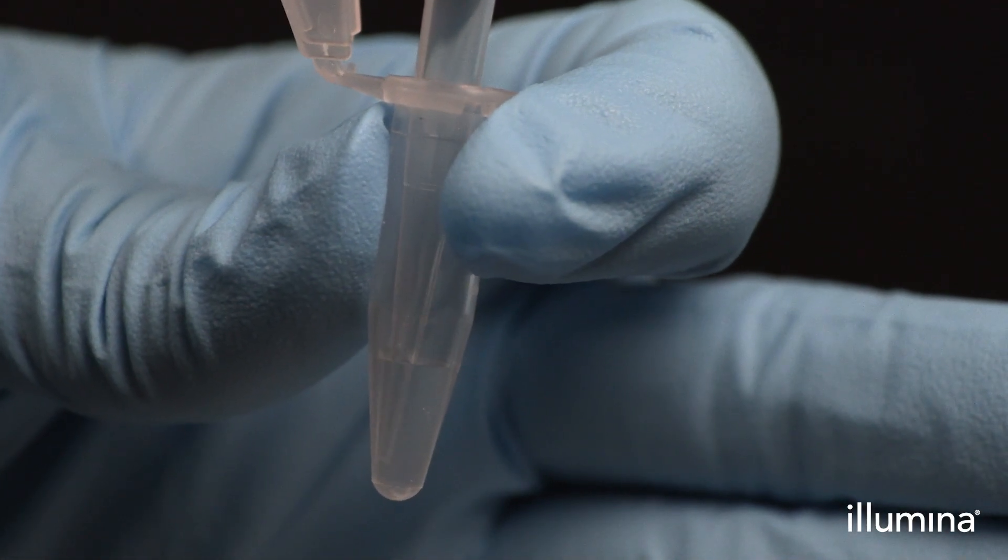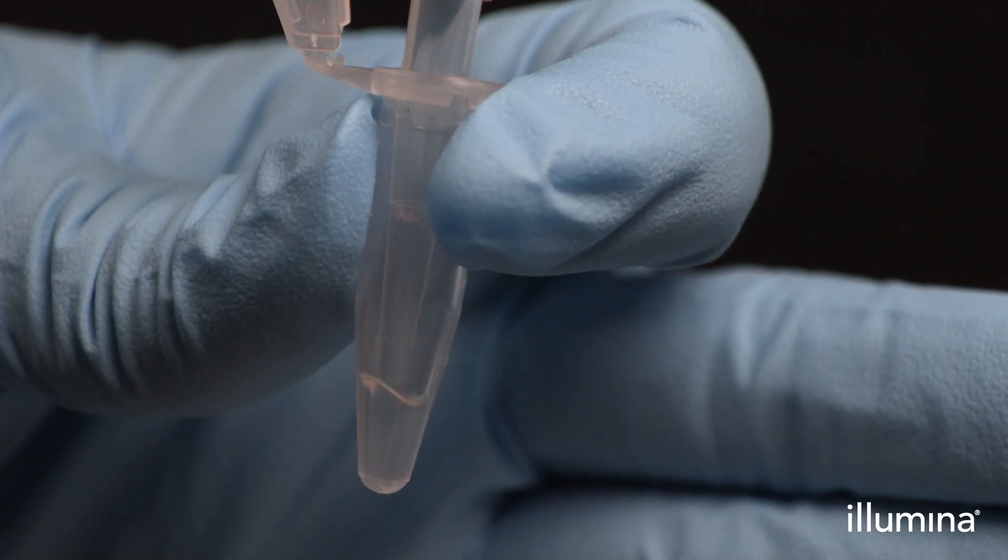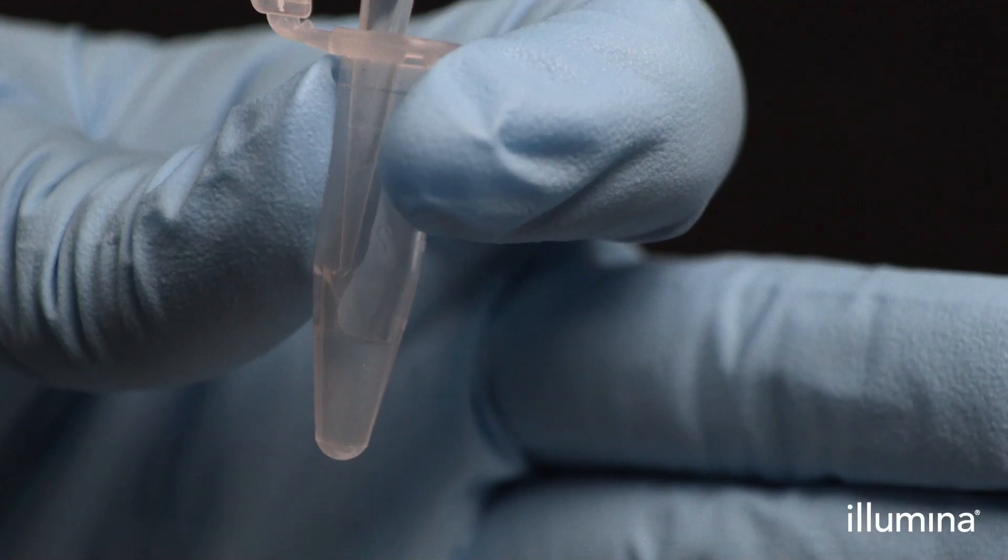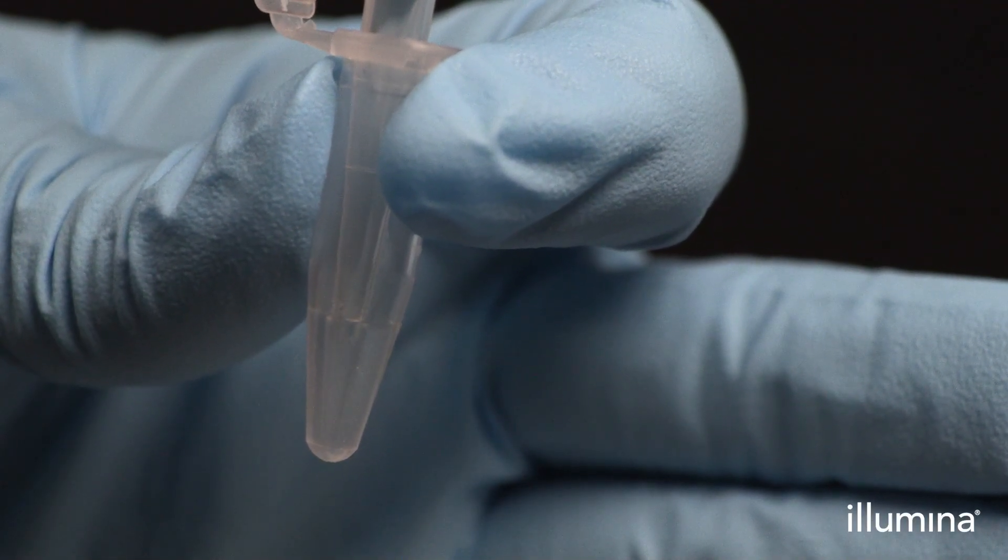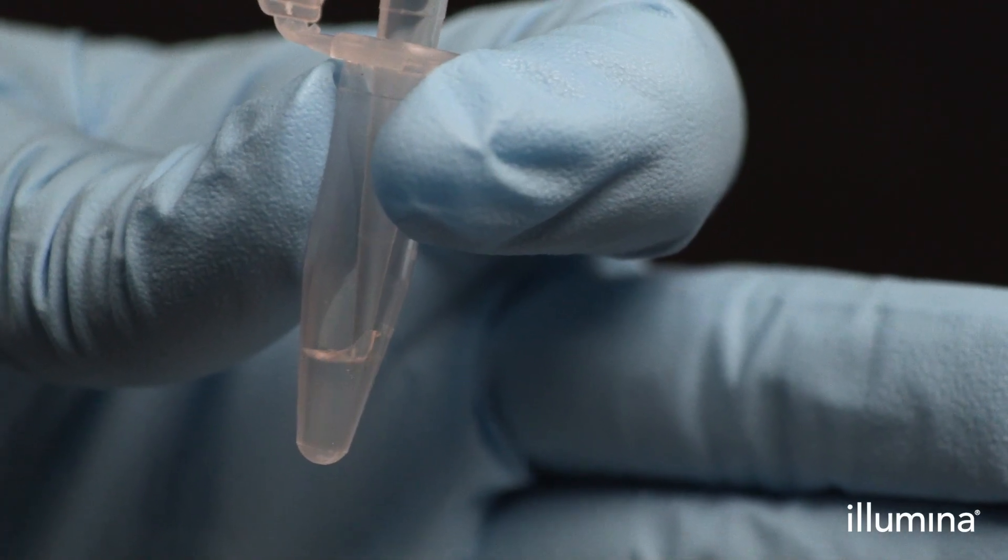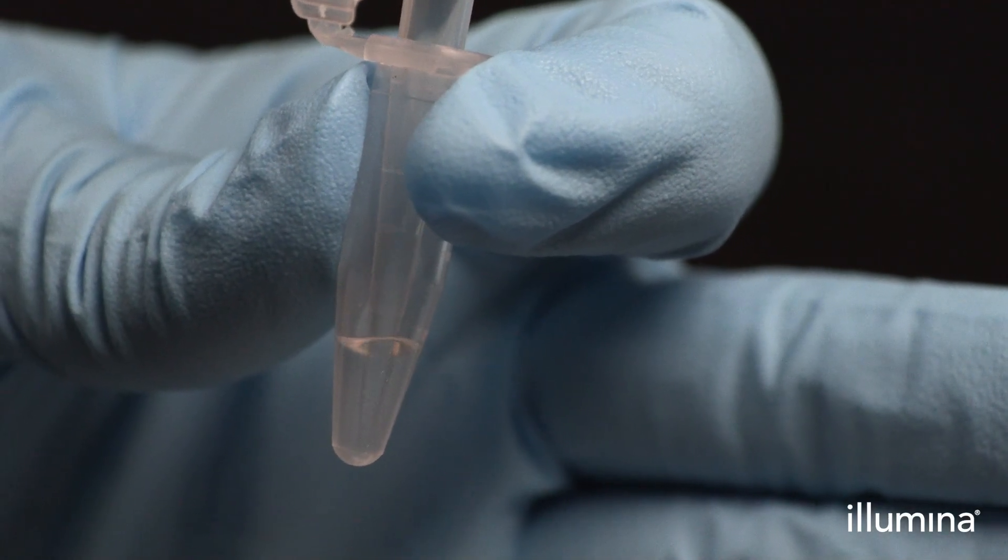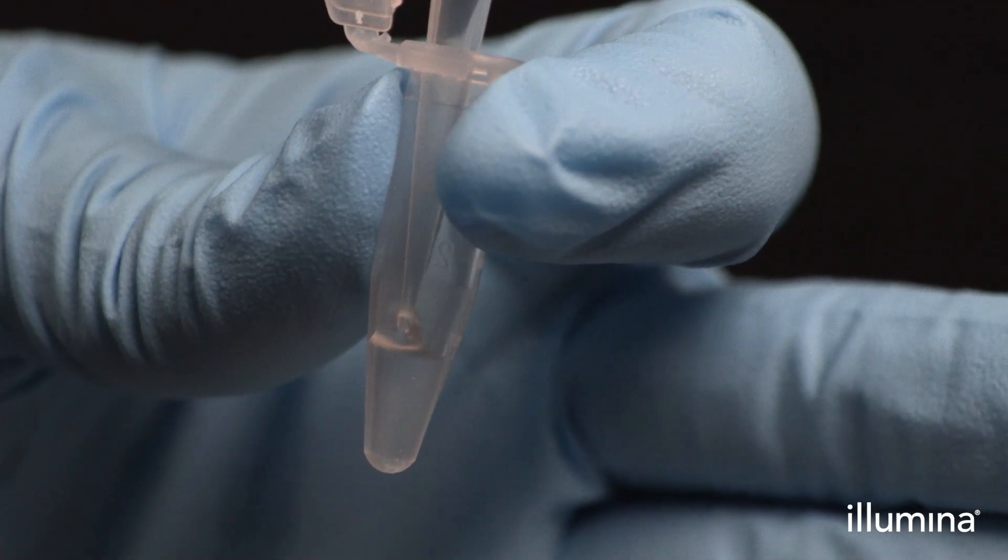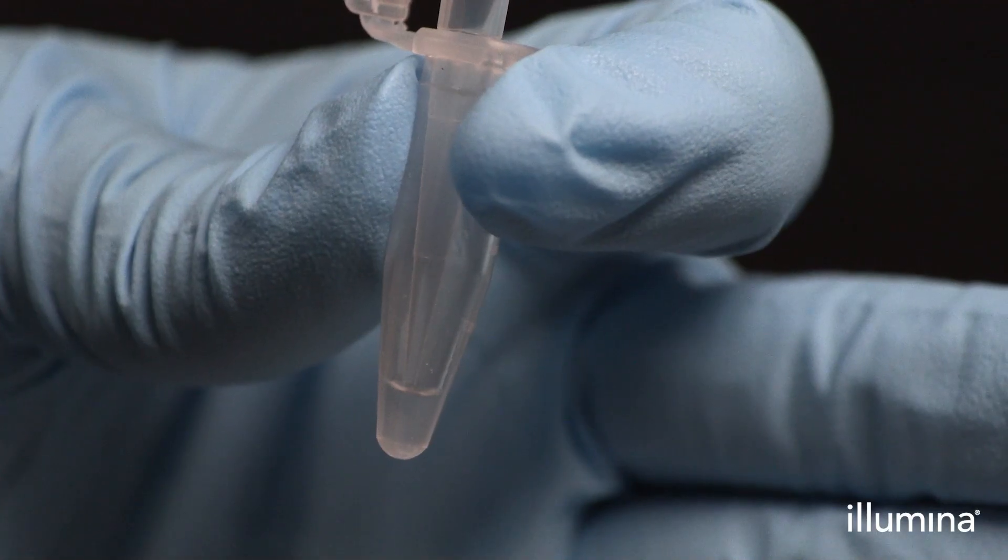Then, pipette mix each sample ten times using a standard-bore, low-retention P200 tip to ensure even dispersal of the sample. It is important to pipette slowly to the first stop only to avoid creating foam or excessive bubbles. This step should be completed with the pip tubes in the four-tube stand. We are not showing that here, so proper mixing can be observed.